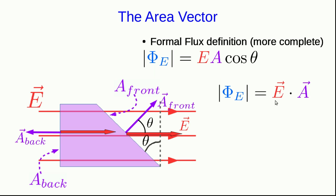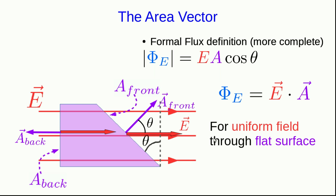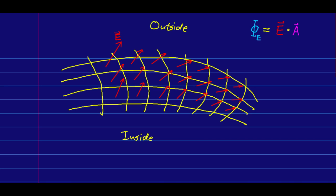So not only is this a more compact way of writing our flux, it also deals with the sign convention. And so this is our fully formal flux definition. Well, fully formal except that it only applies if we're talking about a uniform field through a flat surface. Most of the time, unfortunately, we're not calculating fluxes through flat surfaces. Most of the time we're dealing with things like cylinders and spheres and such. And so we definitely need to know how to deal with non-flat surfaces and variable fields.